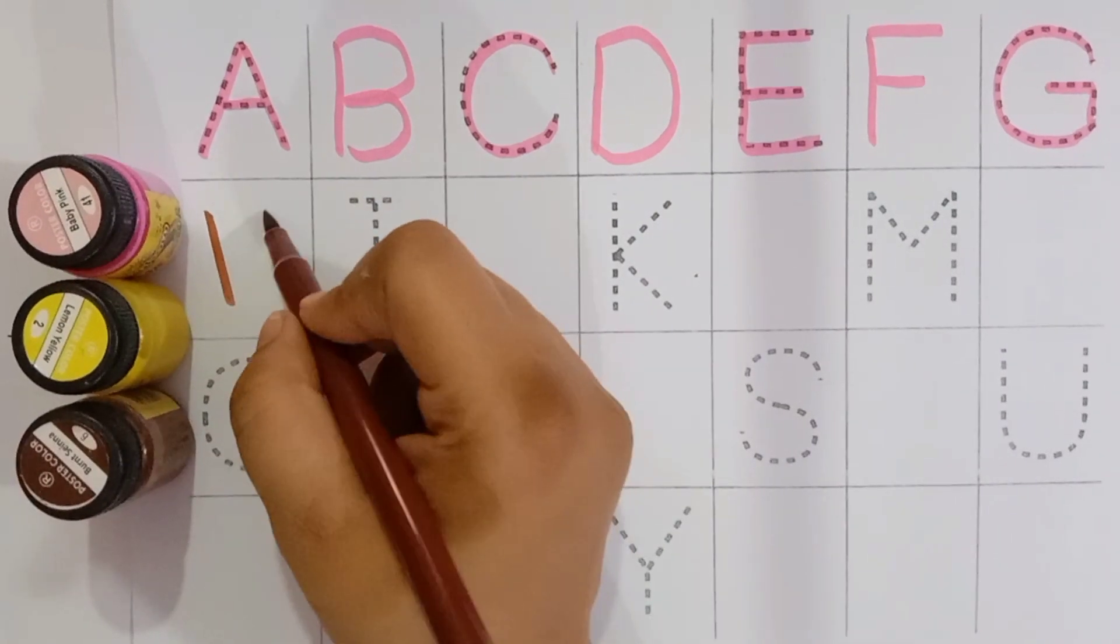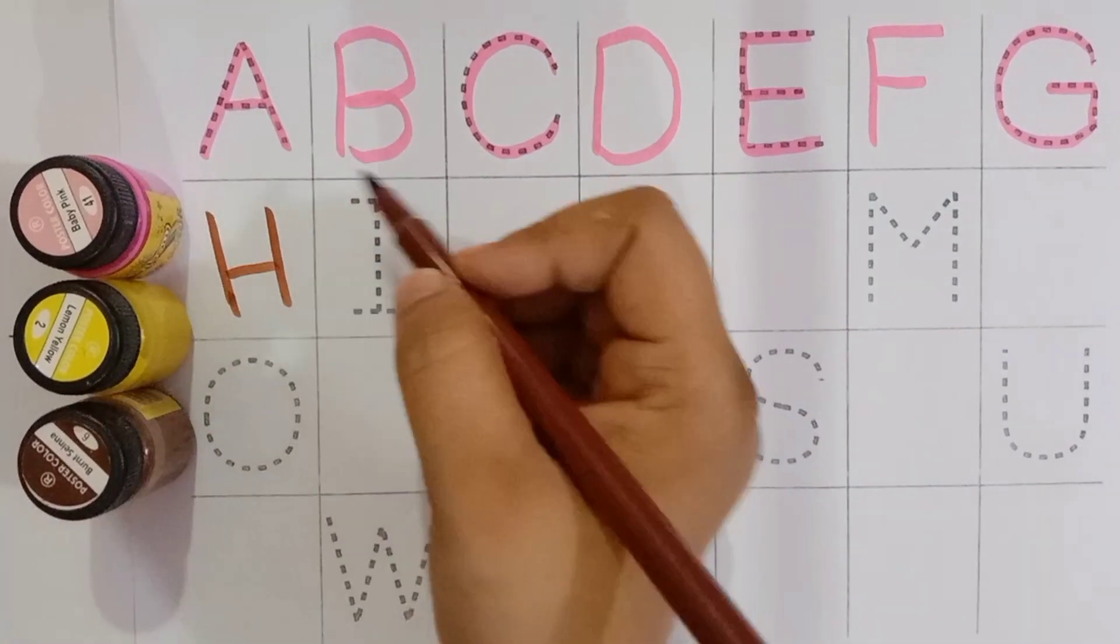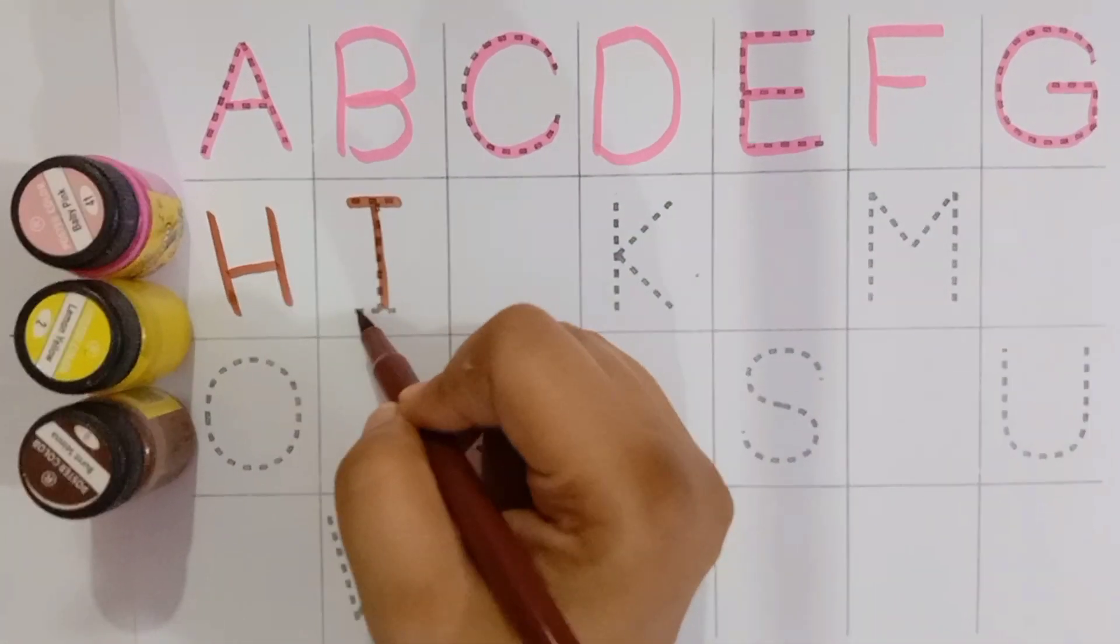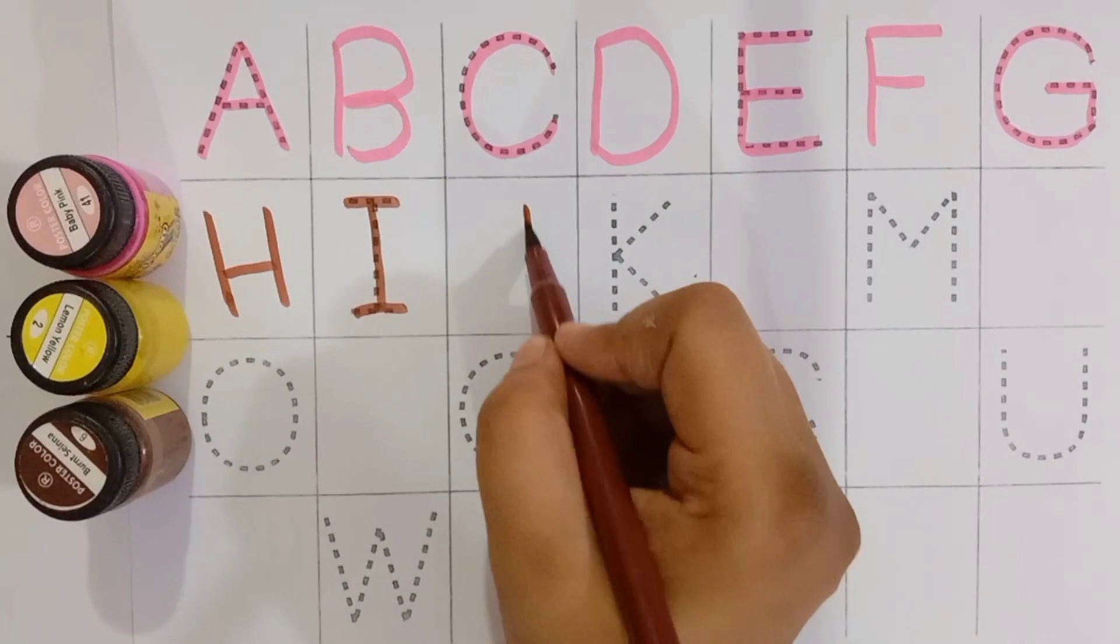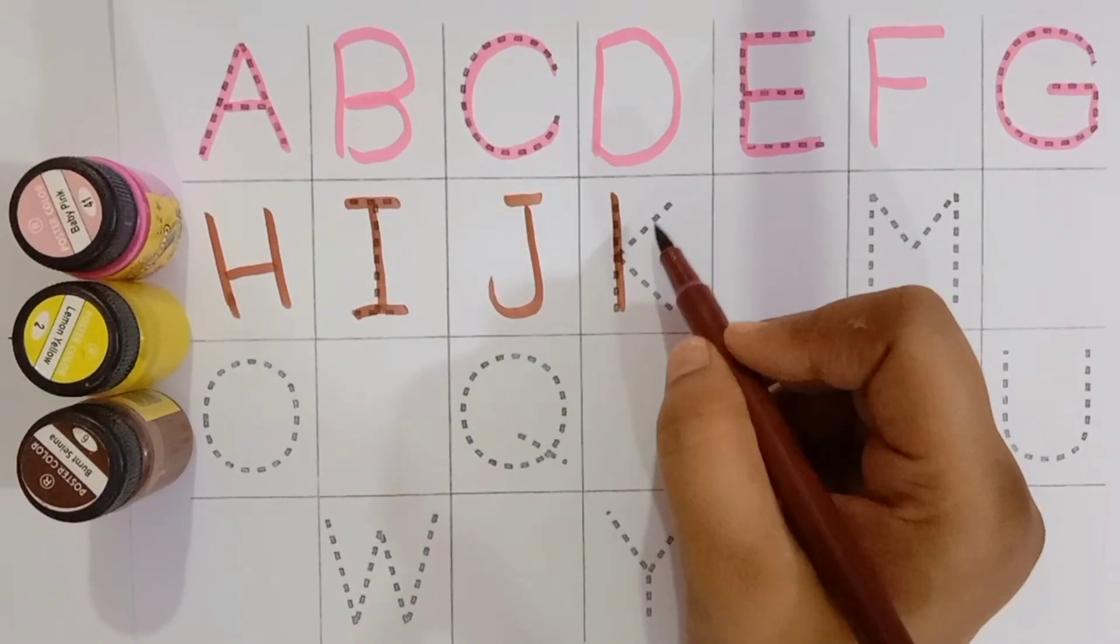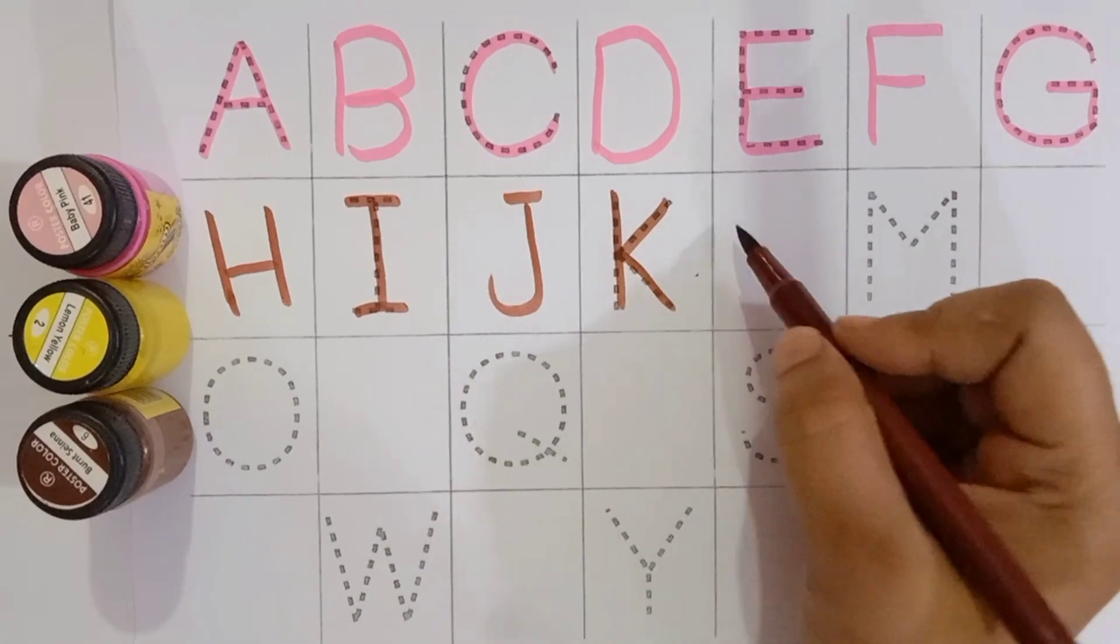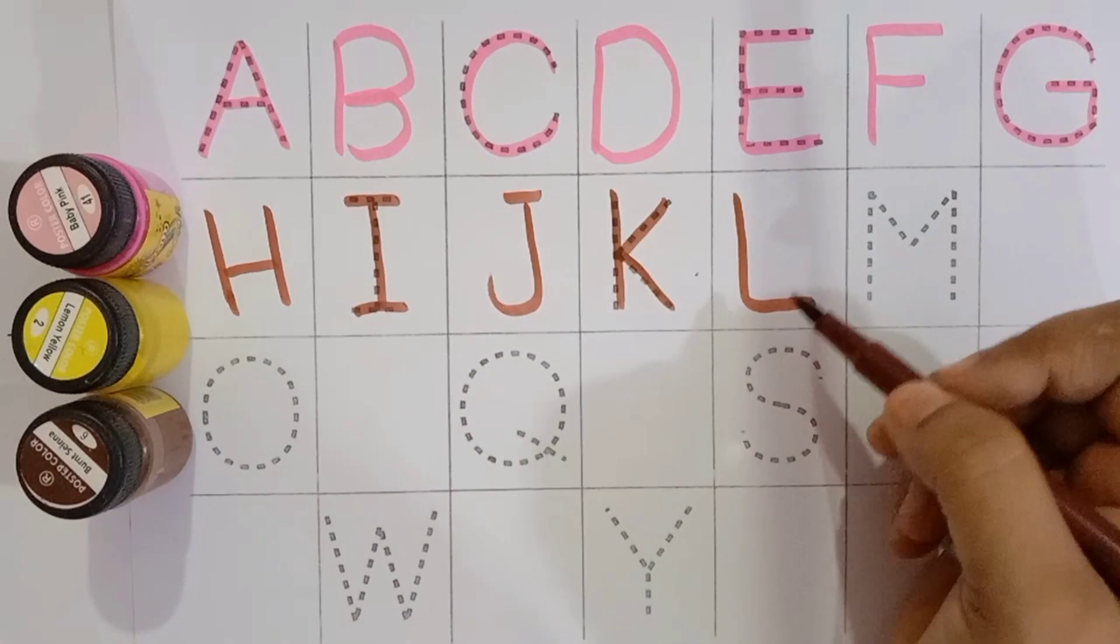H for horse. I for iron. J for jelly. K for kite.